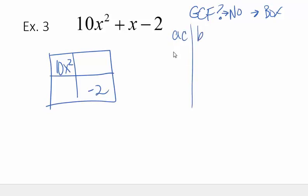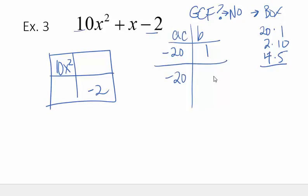Use the ACB method. A times C will give me negative 20. B is a 1. If you think of your factors for 20: 20 times 1, 2 times 10, and then 4 times 5. That's the difference of 1, so we can make that work. To get negative 20, I could say a positive 5 and a negative 4. They would multiply to negative 20 and add to positive 1. So 5x and negative 4x.